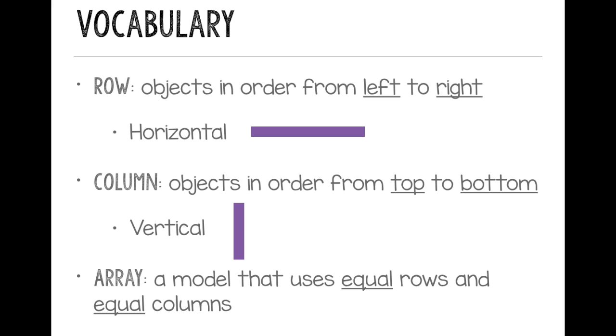A column is when objects are in order from top to bottom. We can also call this vertical. And an array is a model that uses equal rows and equal columns to model a multiplication problem.